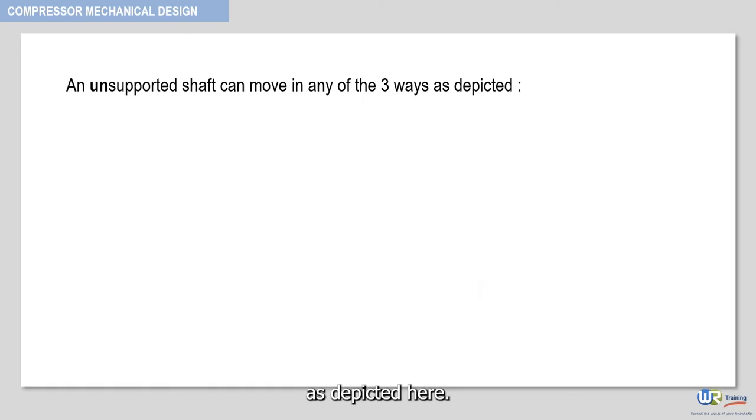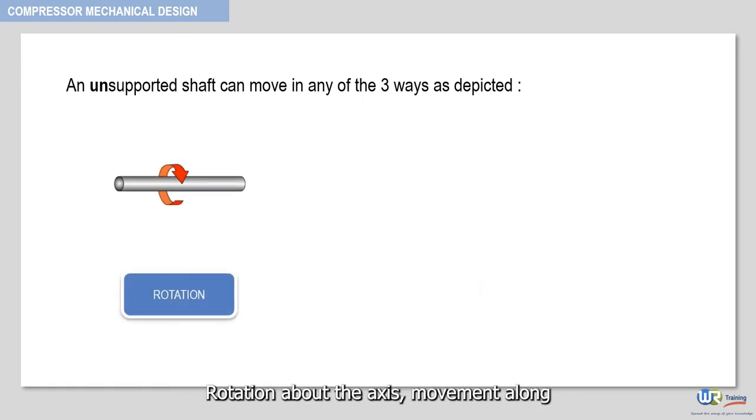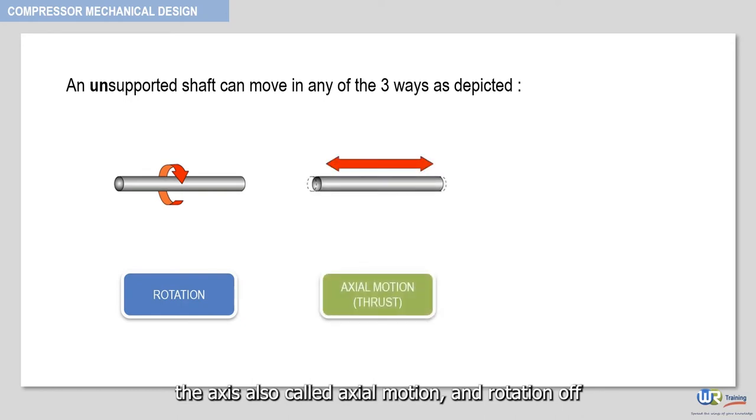An unsupported shaft can move in any of the three ways as depicted here: rotation about the axis, movement along the axis also called axial motion, and rotation off-center also called radial motion.